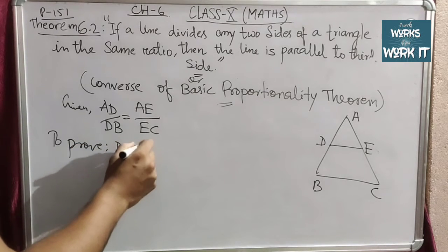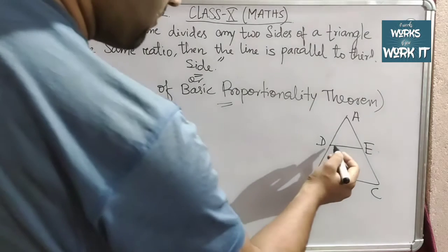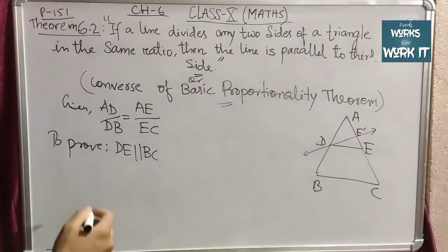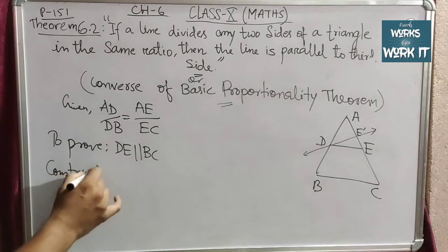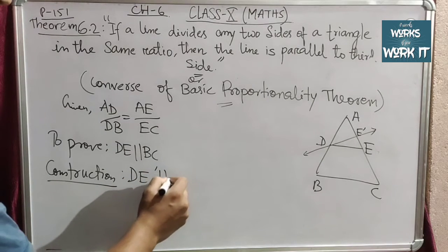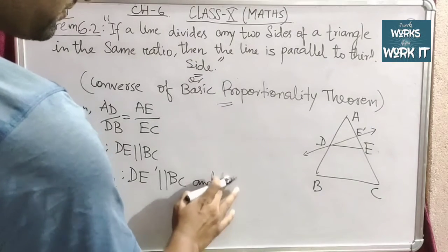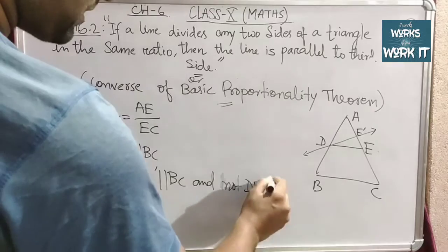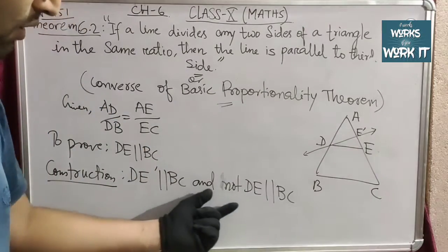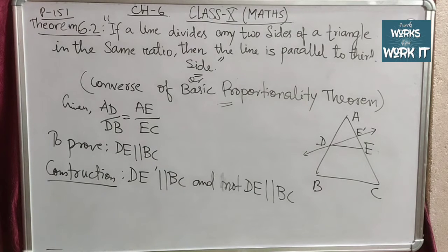For the construction, we will draw a line DE', and we will assume that DE' is parallel to BC. So in the construction, DE' is parallel to BC — we are assuming this, and not that DE is parallel to BC. As you can see in the diagram, we assume only DE' is parallel to BC. We will start the solution using DE' parallel to BC.